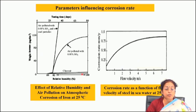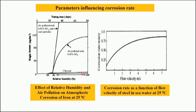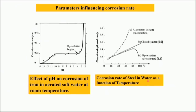Corrosion rate is usually measured in terms of weight gain as a function of time, temperature, or different environmental parameters. As you increase flow velocity, the corrosion rate also increases to a large extent. Similarly, the effect of pH is important: as pH increases, corrosion rate increases, then remains quite steady, and after a certain value it increases to a large extent because hydrogen evolution starts, which raises the rate of corrosion significantly.